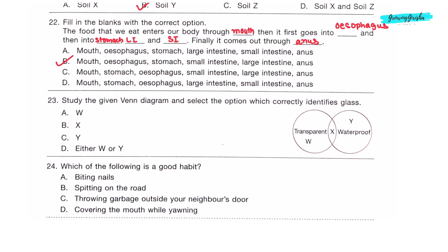Question 23: Study the given Venn diagram and select the option which correctly identifies glass. In the given Venn diagram, W is transparent, Y is waterproof, X is something that is both transparent and waterproof. X could be glass because glass is transparent and waterproof. It does not absorb water. So option B is the correct answer. Question 24: Which of the following is a good habit? Covering the mouth while yawning is a good habit. Option D.